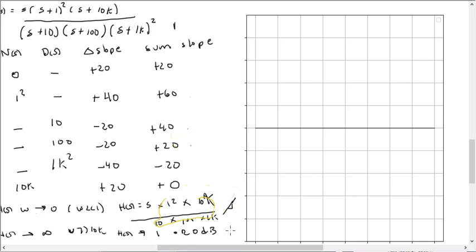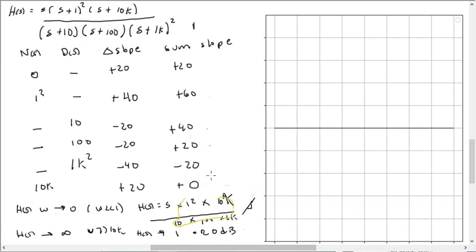Then when we look at the transfer function, when omega goes to infinity, all the poles and zero information drops out, and we have S to the fourth divided by S to the fourth, which turns into 20 dB, and so it's flat. So that's where the magnitude will end up.